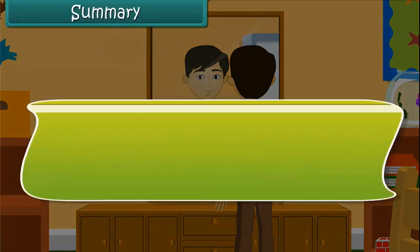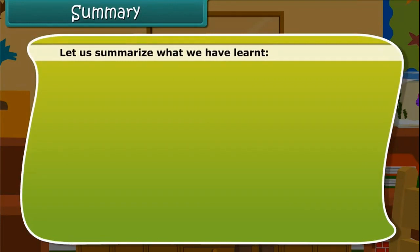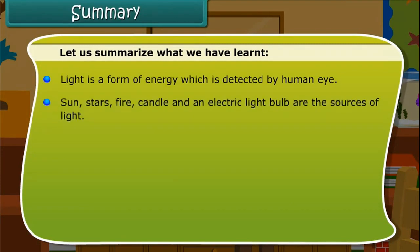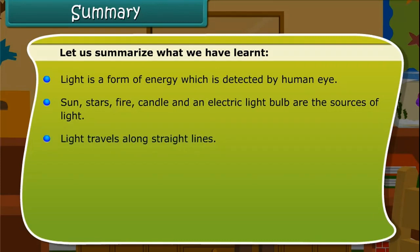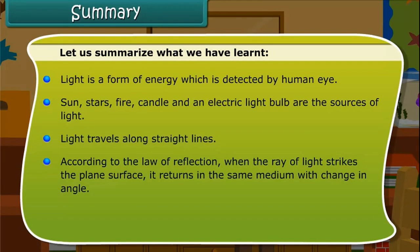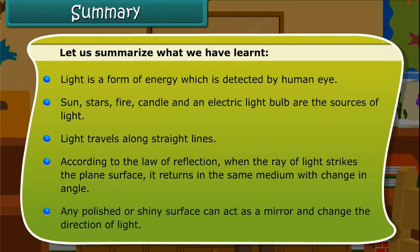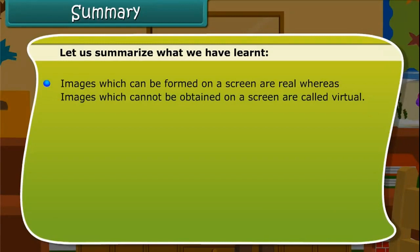Summary. Let us summarize what we have learned. Light is a form of energy which is detected by the human eye. Sun, stars, fire, candle and an electric light bulb are the sources of light. Light travels along straight lines. According to the law of reflection, when the ray of light strikes the plane surface it returns in the same medium with change in angle. Any polished or shiny surface can act as a mirror and can change the direction of light. Images which can be formed on a screen are real, whereas images which cannot be obtained on a screen are called virtual.